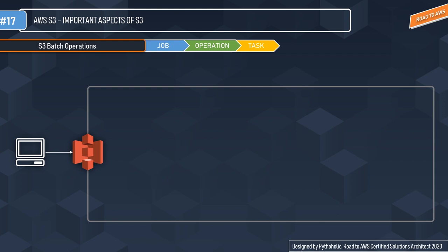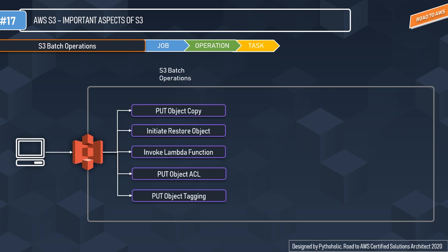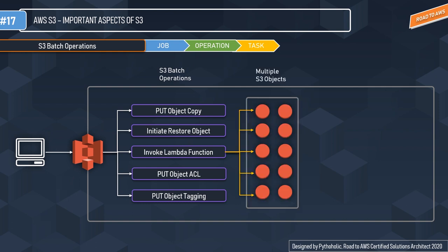To create a batch operation you first need to create the job, which has all the information needed to execute it. There are specific operations S3 provides for objects. Here we have the client and Amazon S3 with all the batch operations: put object copy, initiate restore objects, invoke Lambda function, put object ACL, and put object tagging. These can be executed on multiple S3 objects. The first operation is put object copy — you create a copy of an object already stored in Amazon S3 using the put copy object API.